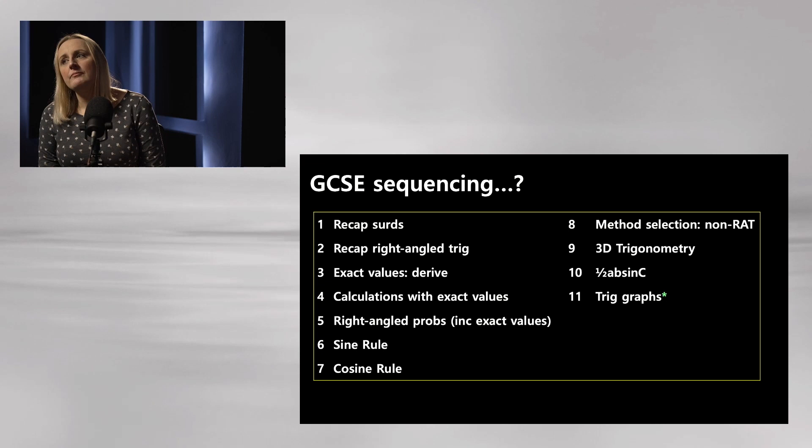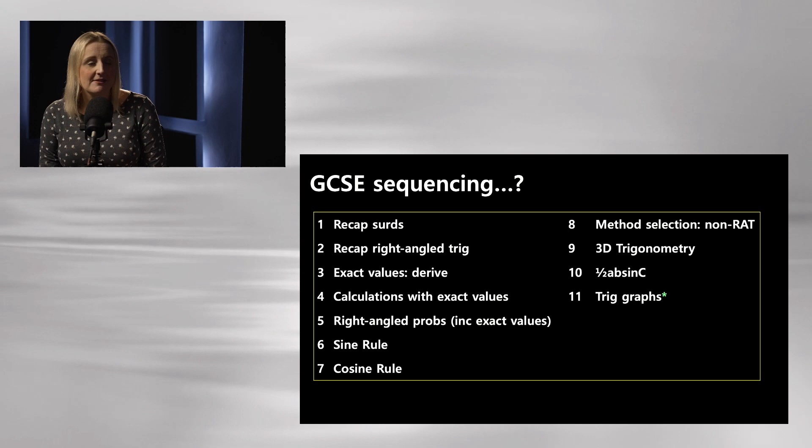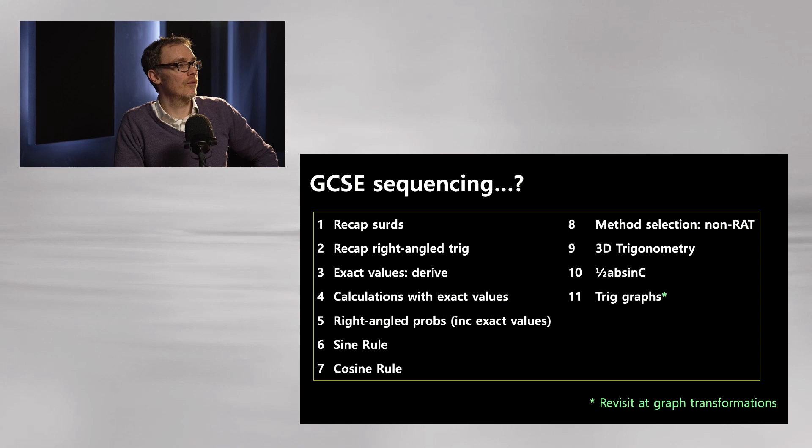That 14-lesson sequence is like four weeks of teaching, whereas most people get two weeks. In my scheme of work we have three weeks, so we don't do all of those lessons. There's a trig graphs section too — the star means I revisit it when I do graph transformations. We do all the main trig in Year 10, then in Year 11 during graph transformations I recap trig graphs and we translate and reflect them.